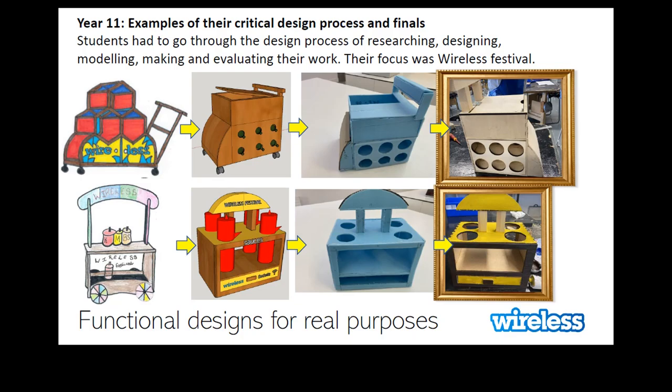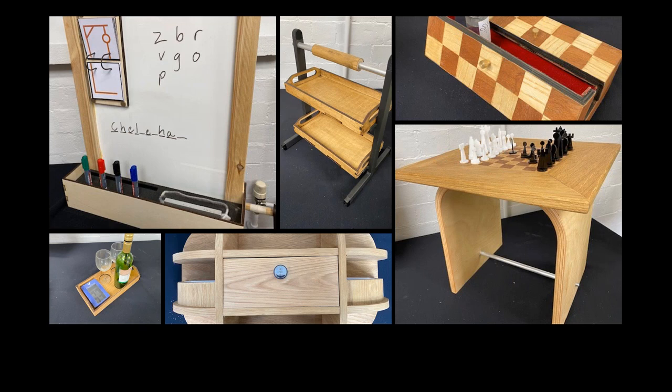Here again are some examples of students' coursework, where they're looking at evaluating the technical design process and their final outcomes. You can see this progress from a hand drawing on the left, through to a 3D model done on Google SketchUp, then modelling using Styrofoam, and finally the end product made from wood — based on a design brief for the Wireless Festival. Some further design ideas using timbers show fantastic outcomes from our Year 11s, which you will definitely be producing if you choose GCSE Design Technology.